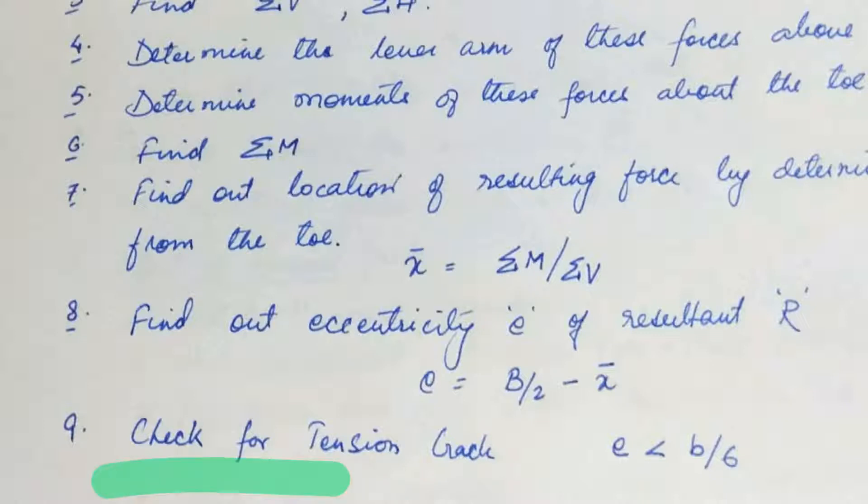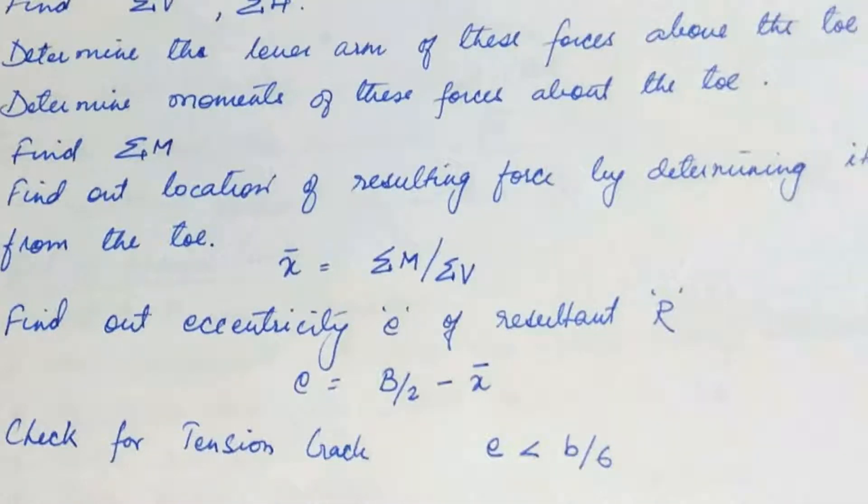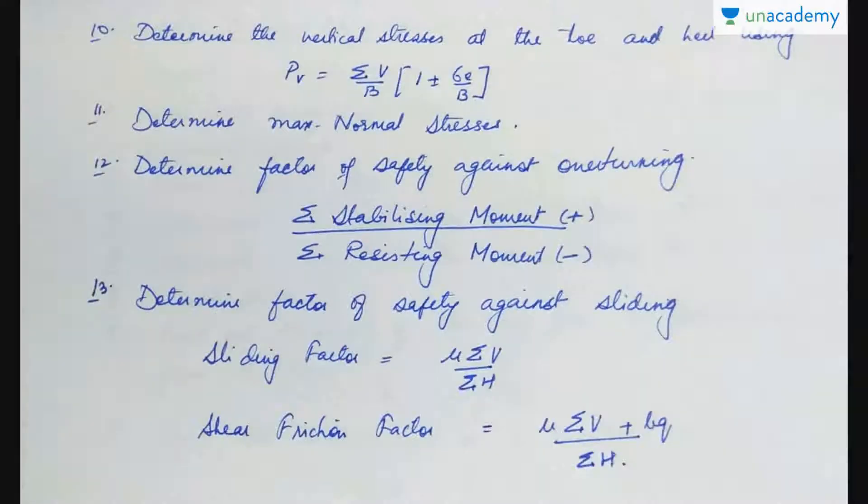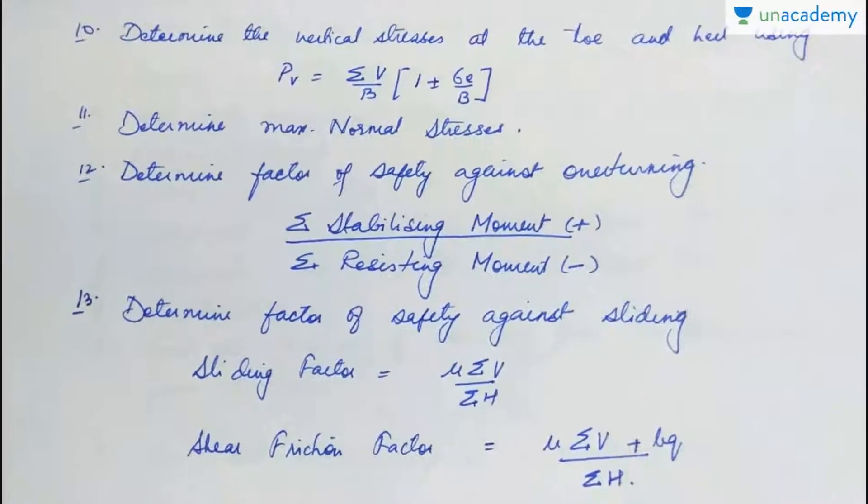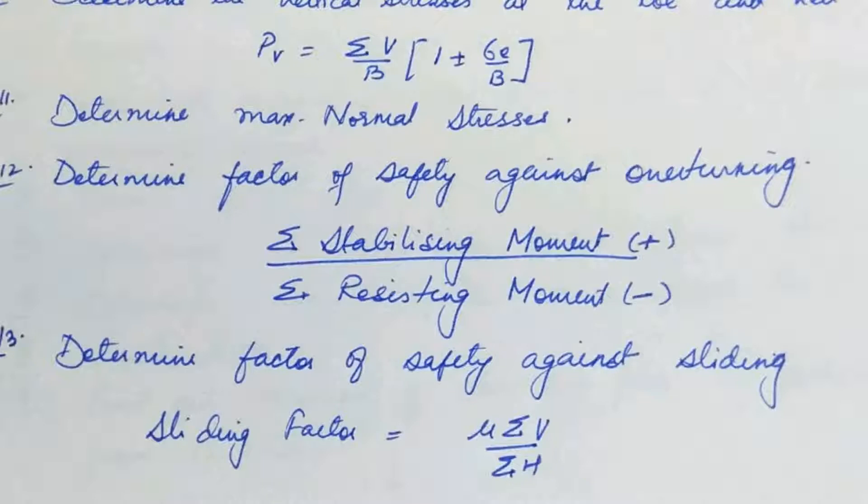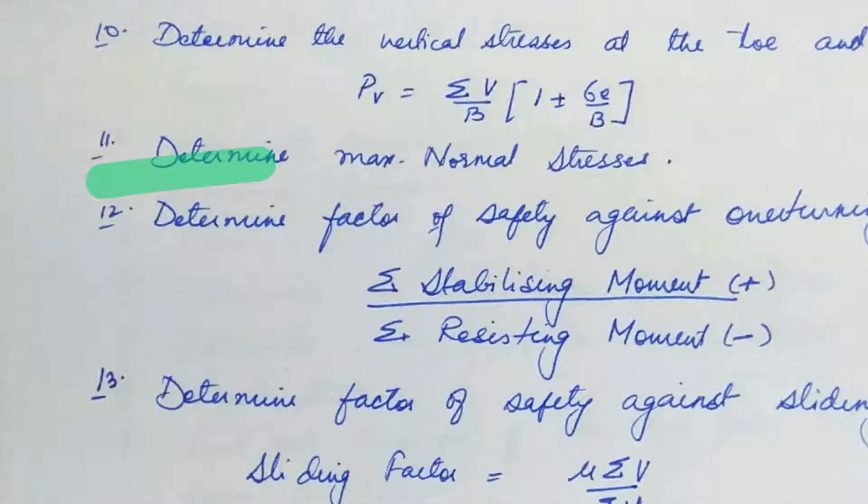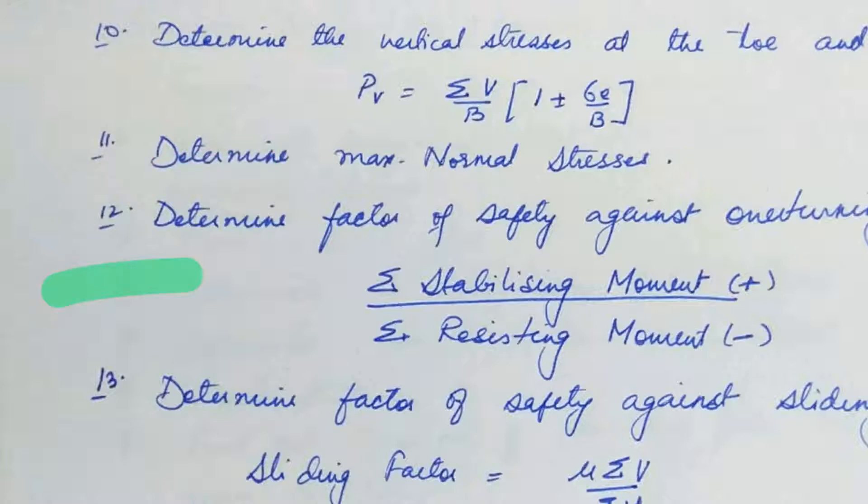Next step, check for tension crack, which we have just now learnt about it that if e is less than d by 6, then your structure is safe for your tension crack. So, find out the value of b by 6 and compare it with b. Now, determine the vertical stresses at the toe and PV is actually equal to sigma v upon b, 1 plus minus 6 e upon b. Now, determine the maximum normal stresses.